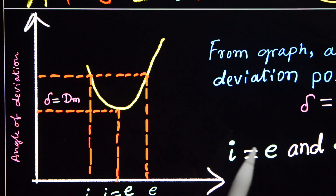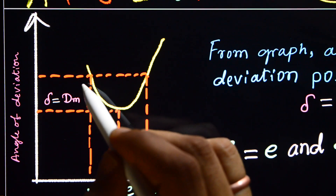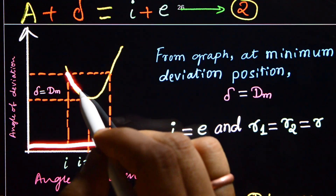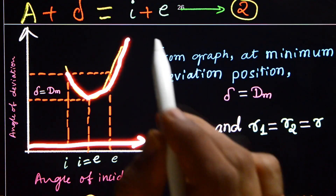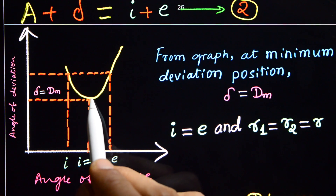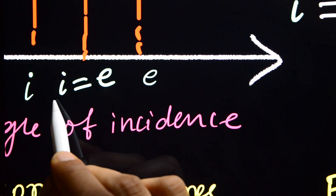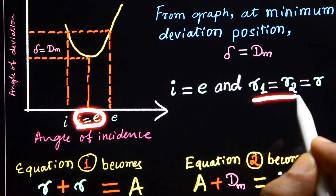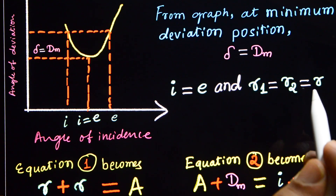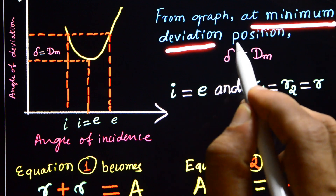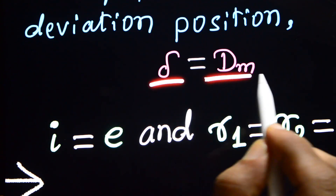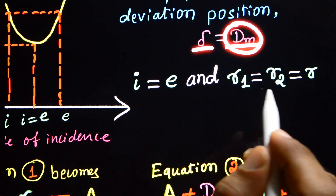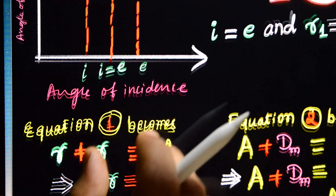From experiment, as you increase the angle of incidence, the angle of deviation decreases, reaches a minimum, then increases again. At the angle of minimum deviation, the angle of incidence equals the angle of emergence, i.e., I equals E. Correspondingly, R1 equals R2, which we call R. So at minimum deviation position, delta equals dm, I equals E, and R1 equals R2 equals R.